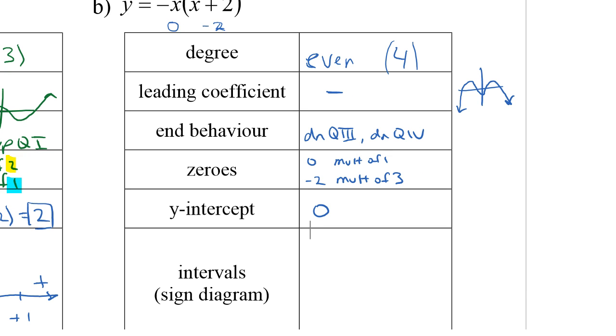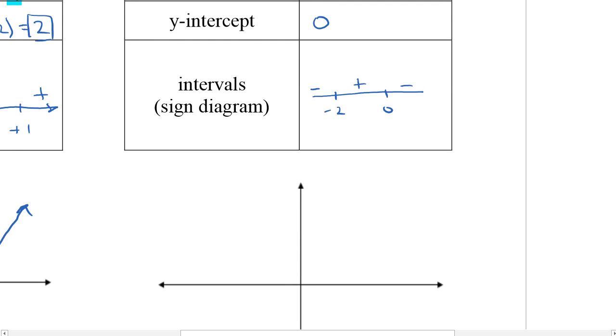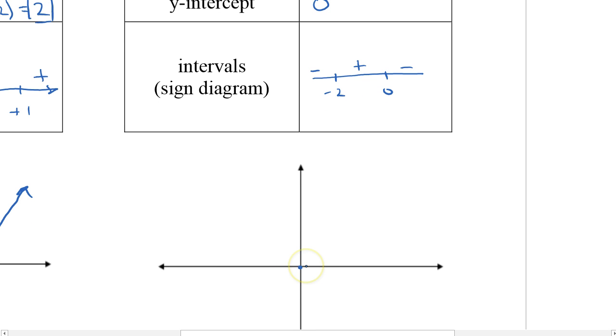If we're drawing the sign diagram, I would put negative 2 and then 0. I know it's going to be down in quadrant 3 and quadrant 4, so I have a negative here and a negative there. At negative 2, I have a multiplicity of 3, which means it does change signs there, so I do get a positive, and then it turns negative again. What does this look like when I graph? It comes from the negative, goes up, and has that inflection point look with multiplicity of 3.